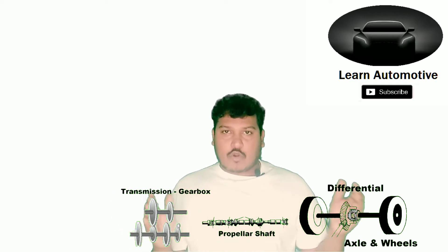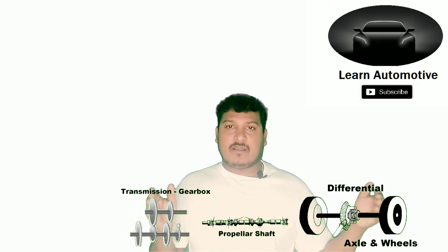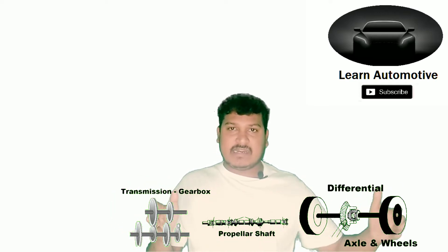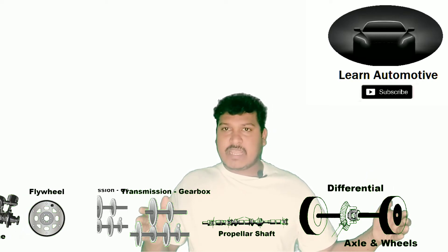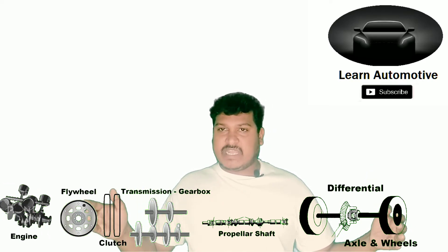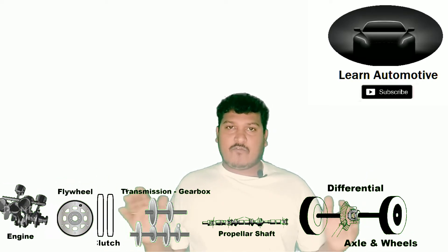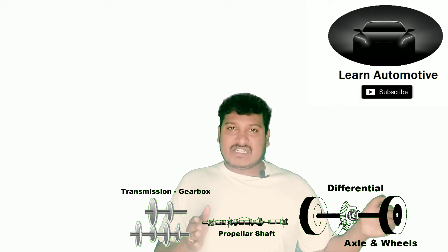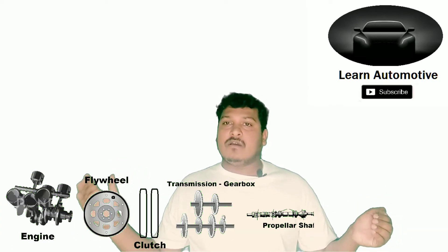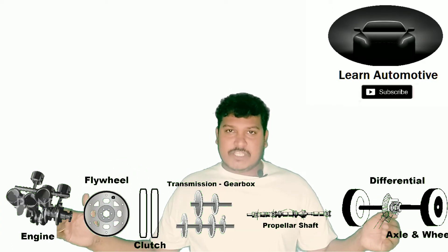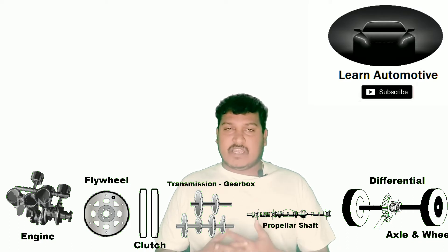These are all the components that the drive train has. It starts with the transmission until the wheel. Before that, we have clutch, flywheel, and engine — you can ignore those for the drive train, but for understanding purposes, we need the engine as well.